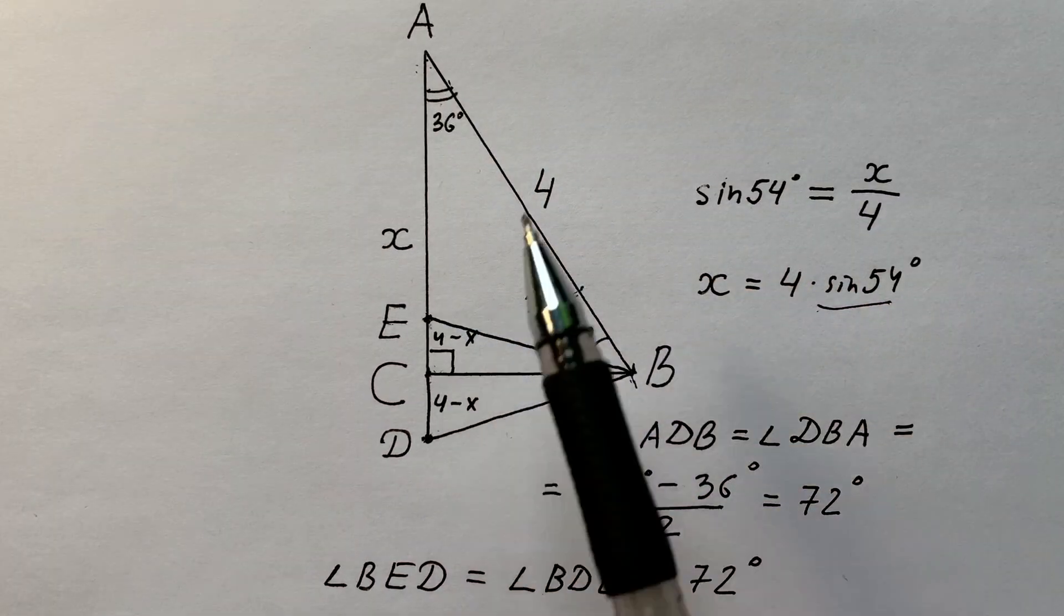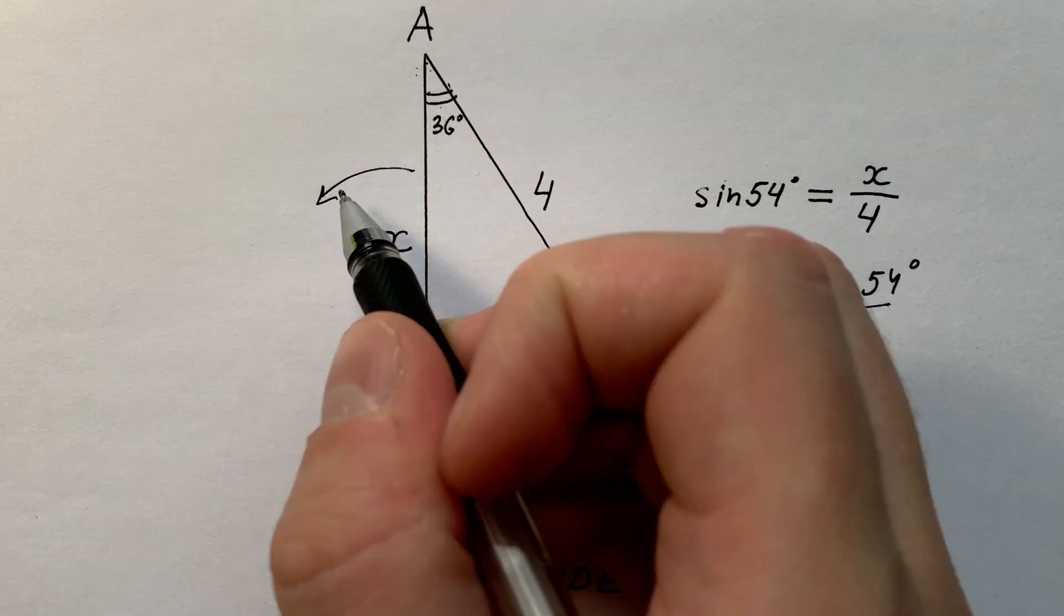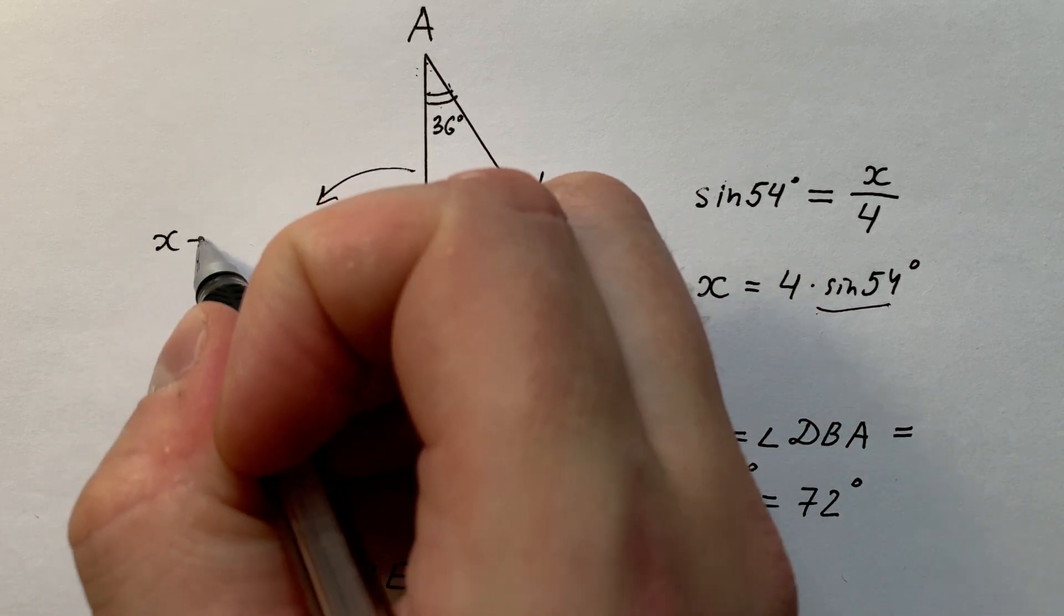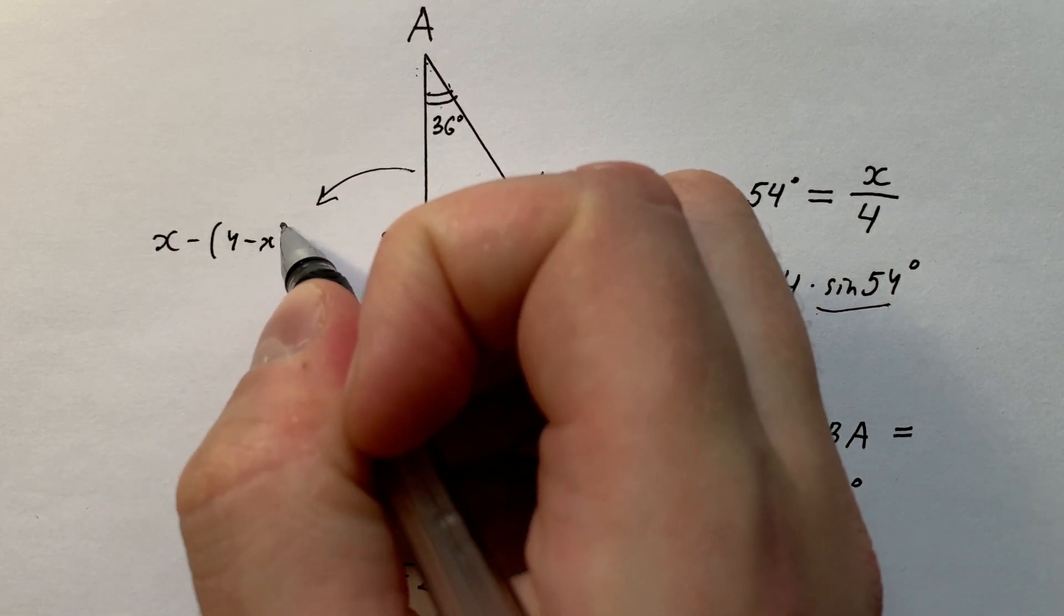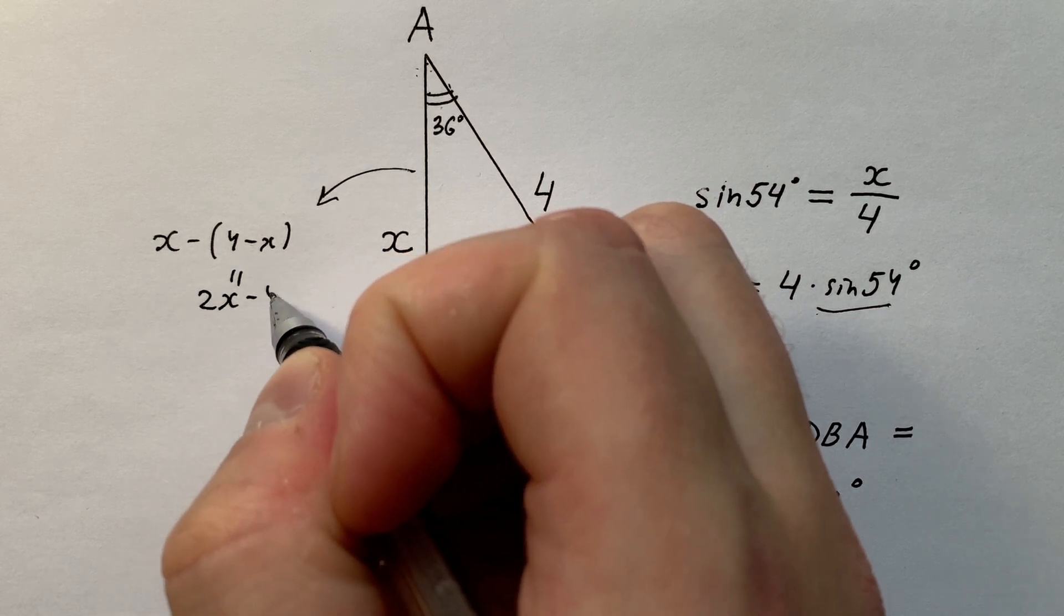We know that AE equals AC minus CE, which is x minus (4 minus x). That means that AE equals x minus bracket 4 minus x, and it equals 2 times x minus 4.